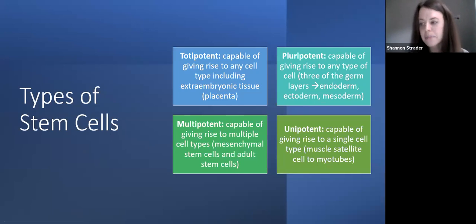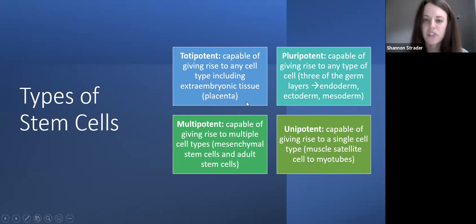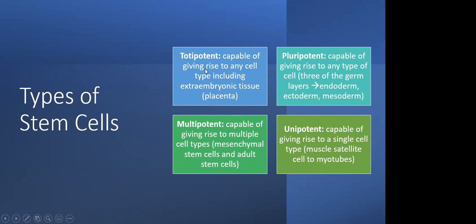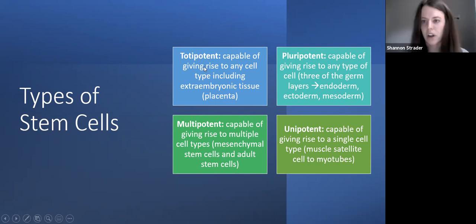Unlikely to be seen in clinical applications are totipotent stem cells. They are capable of giving rise to any cell type, including extraembryonic tissue such as the placenta. This is more for the lab and basic science research.